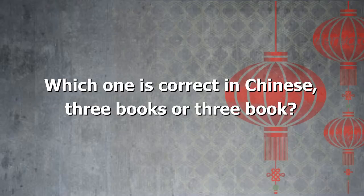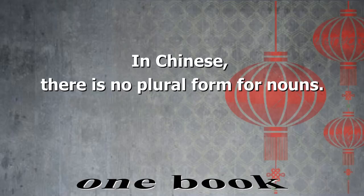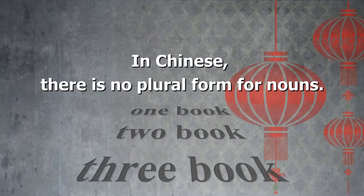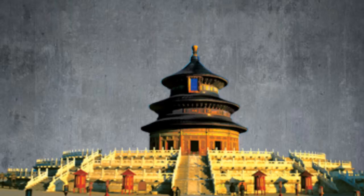Have you noticed that in the second example, instead of 'three books' I used 'three book' in the Chinese translation? That is because in the Chinese language there is no plural form for nouns. All nouns are in singular form and require a quantity and a measuring word to indicate how many there are.